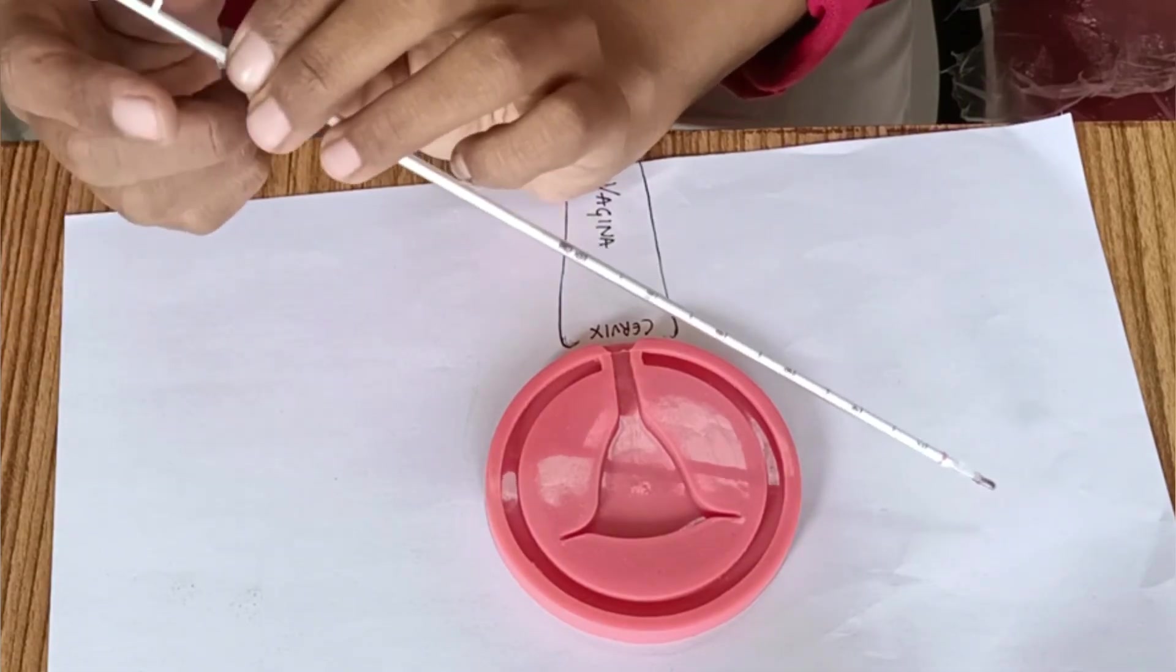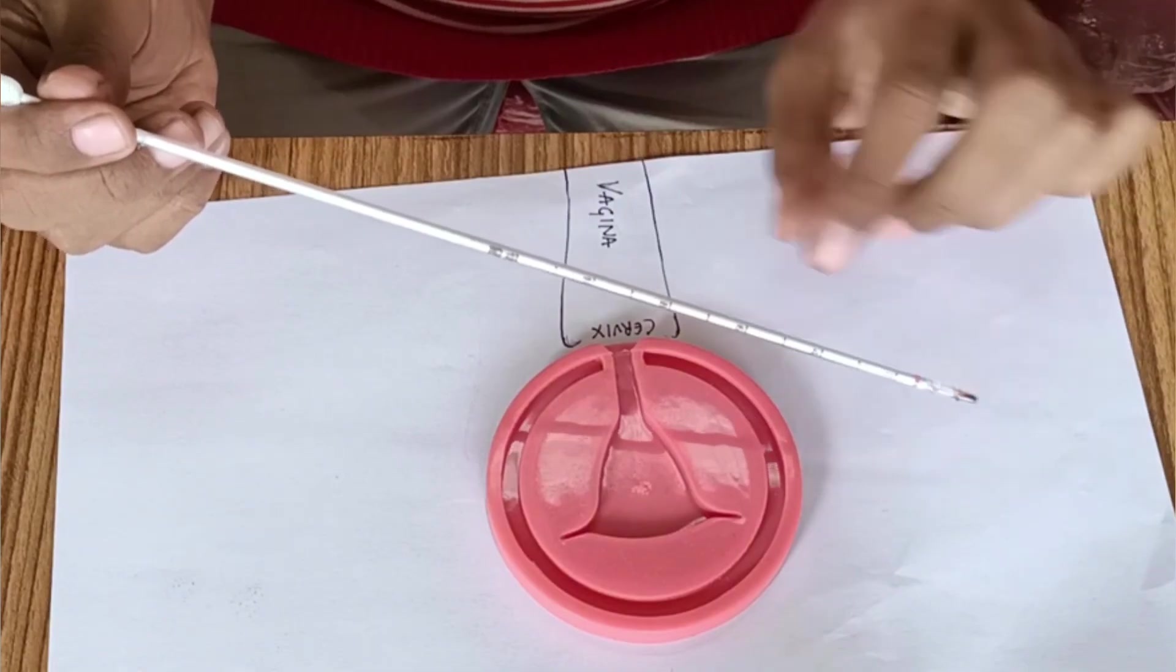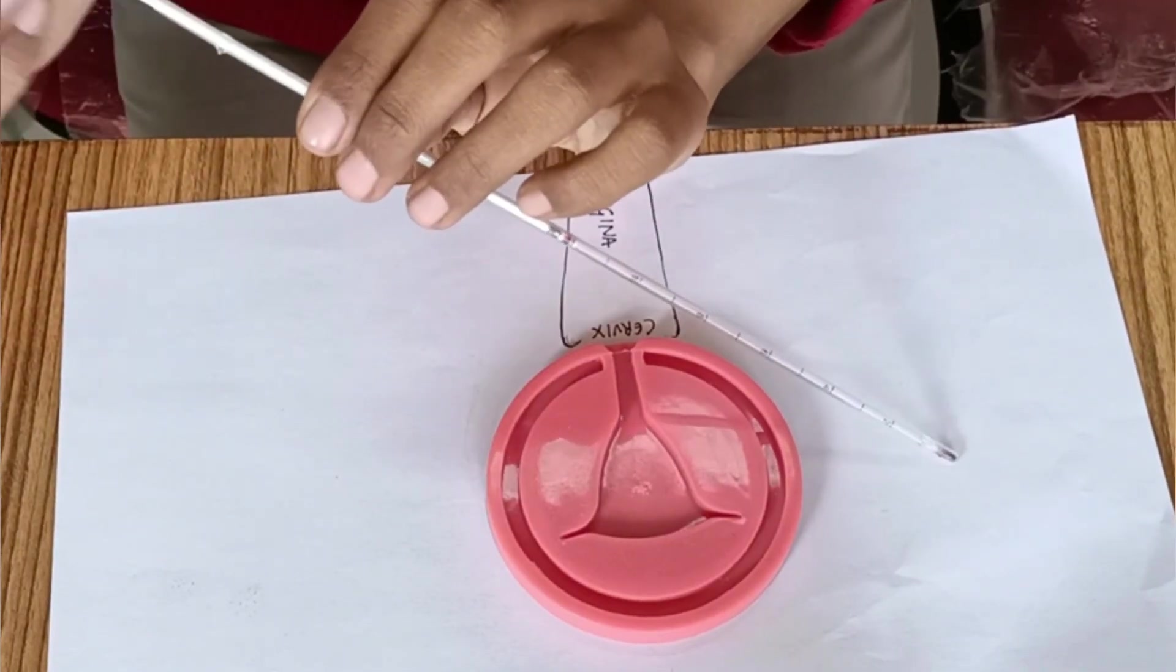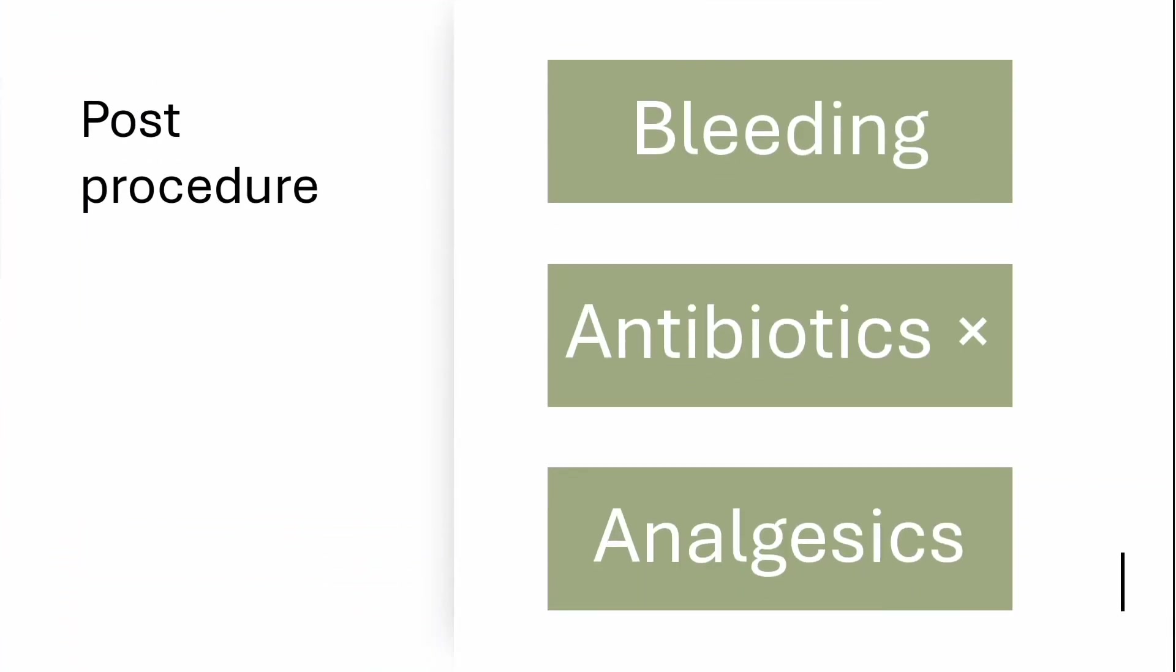So this was all about the procedure. Post-procedure bleeding is common. In case it is excessive, tranexamic acid can be prescribed. Patient usually does not require antibiotics if the procedure is done in a sterile manner, and yes, the patient can be given analgesics if she requires.